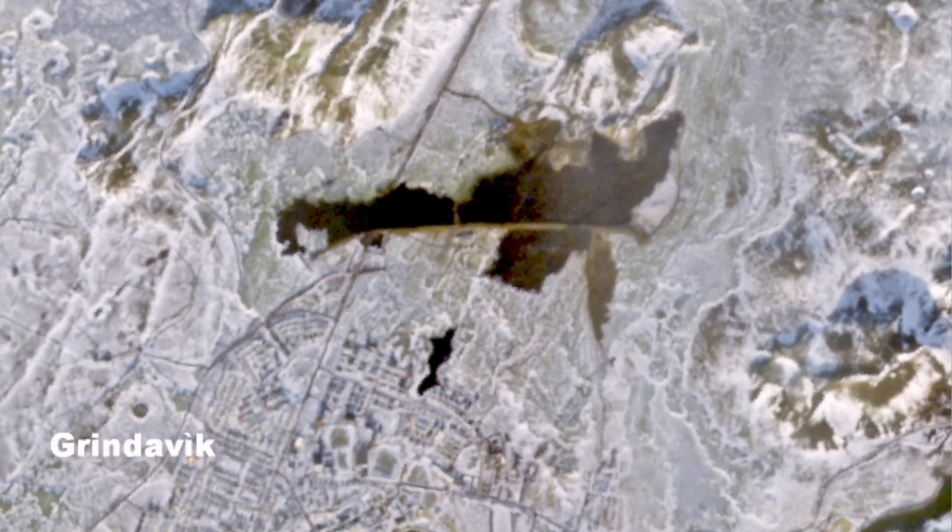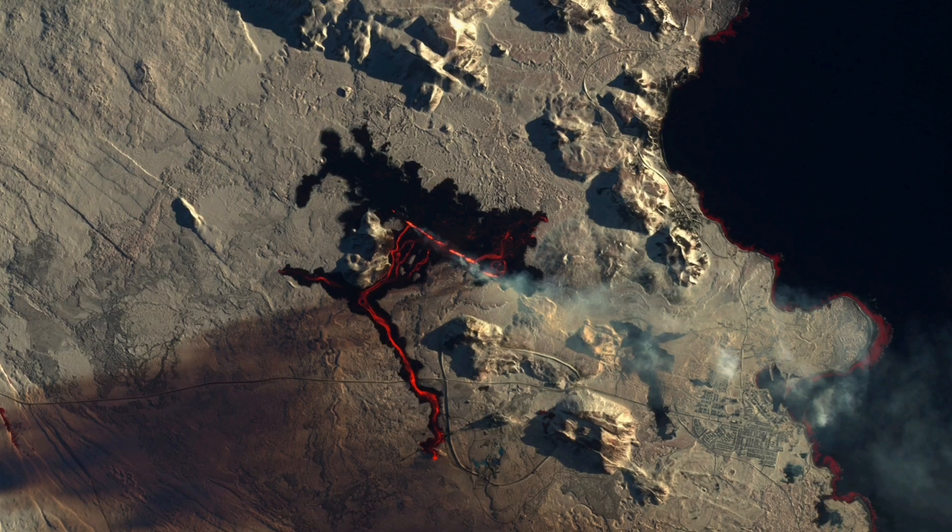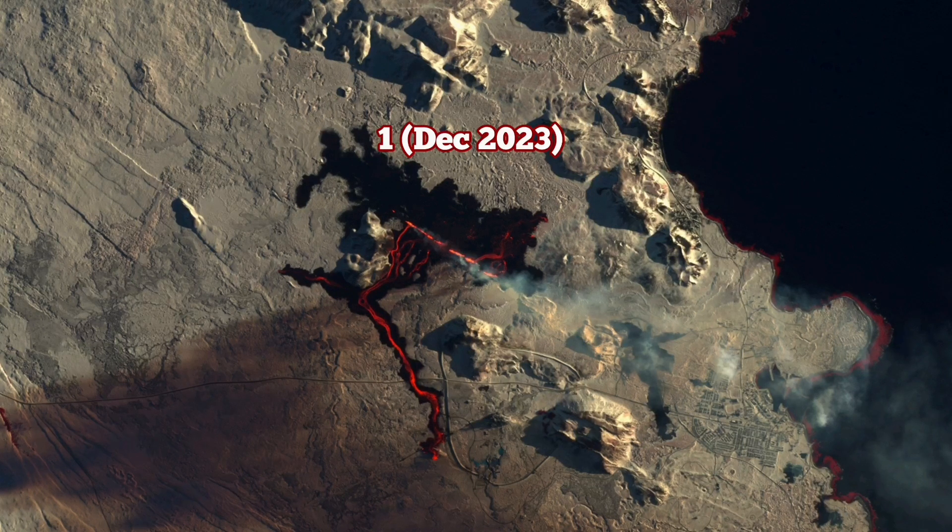Again, we saw that in the seal that erupted and the dike erupted in Grindavik itself. We had first the first line cutting through, slicing through the defense, then another part of it coming and actually invading the town, north part of Grindavik, causing some harm and burning of a few houses.